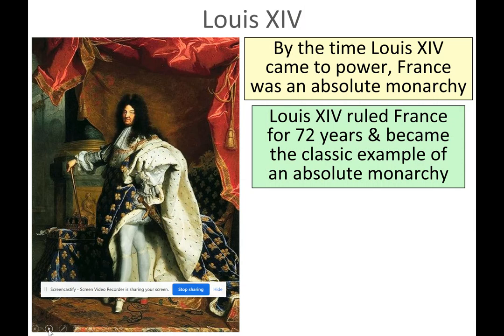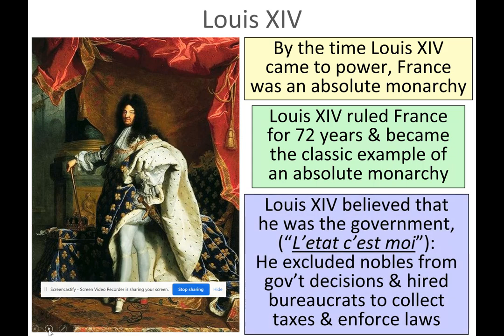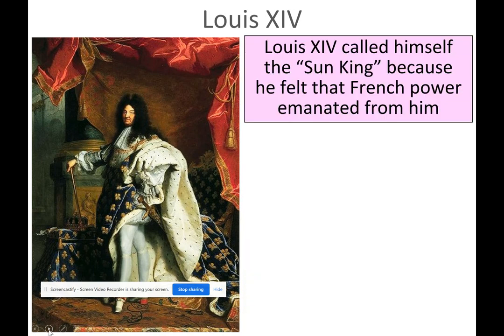By the time Louis XIV came to power, France was an absolute monarchy. Louis XIV ruled France for 72 years and became the classic example of an absolute monarch, exercising all power over the people. He called himself the Sun King because he felt that French power emanated from him — that everything revolved around him and the entire prosperity of France was because he existed.